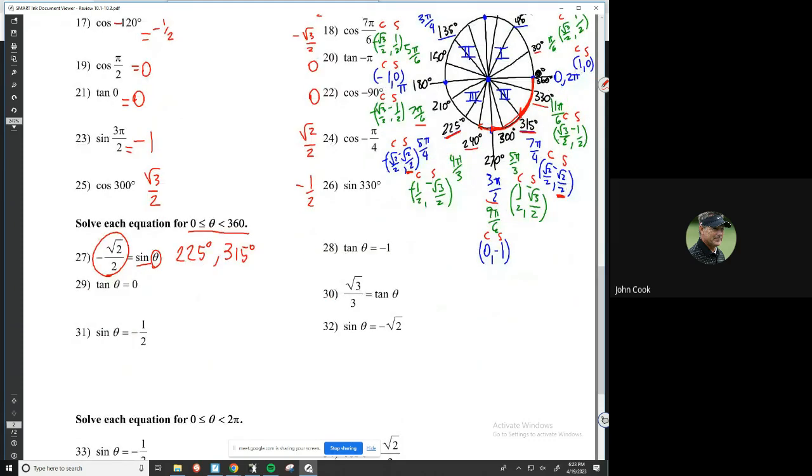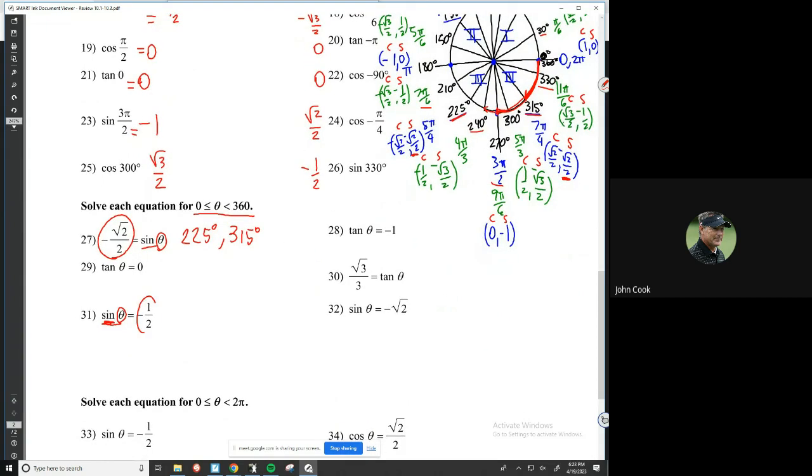Let's do some other easy ones. A lot of tangents in here. Let's focus on the sines for now, and then we'll do the tangents afterwards. So this one, number 31, says find the angles that have a sine equal to negative a half on the unit circle.